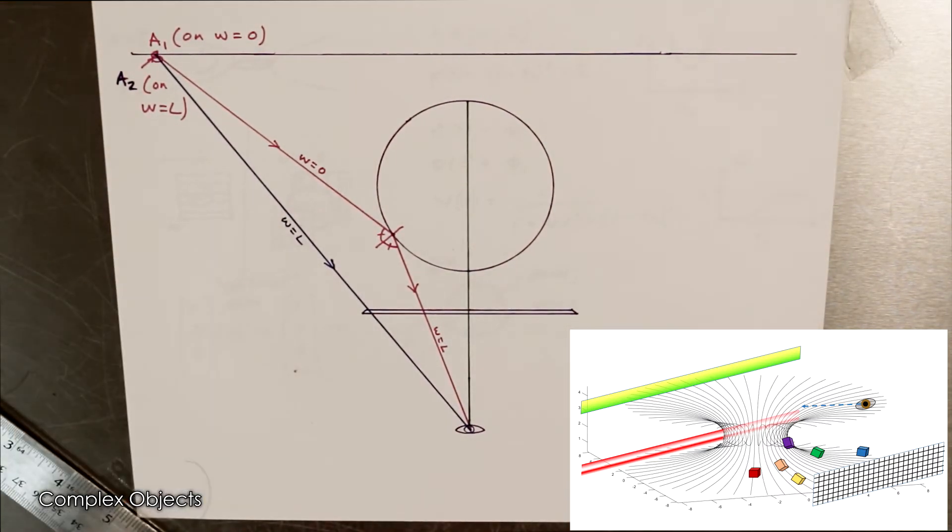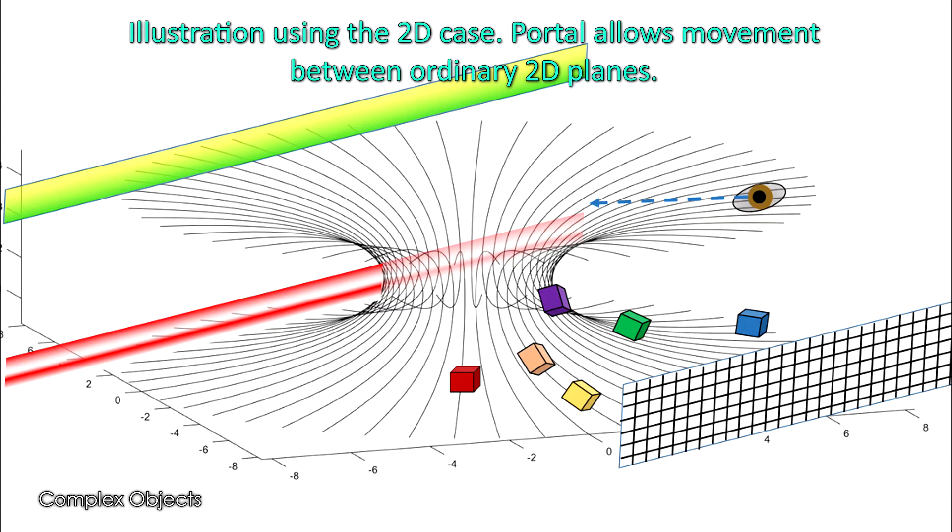But similarly, things that are behind the hole, you're just seeing as they are. And we are positioned on the upper plane, and looking directly into the hole.